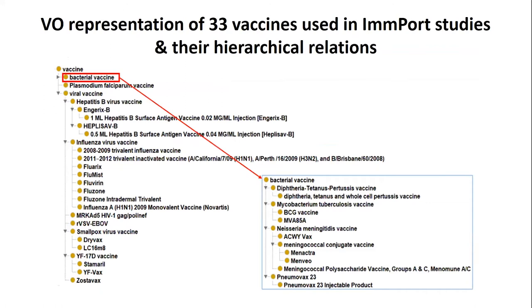As I said, we had 33 vaccines listed in IMPORTER. We looked for all the vaccine IDs, and we can use a tool that can traverse all the vaccines and their relations. So you can have a hierarchy — you can see, okay, now we have bacterial vaccines and viral vaccines. Under viral vaccines, we have influenza vaccines and many others like smallpox and yellow fever. They are organized very well, and there are more details that have been provided by VO.